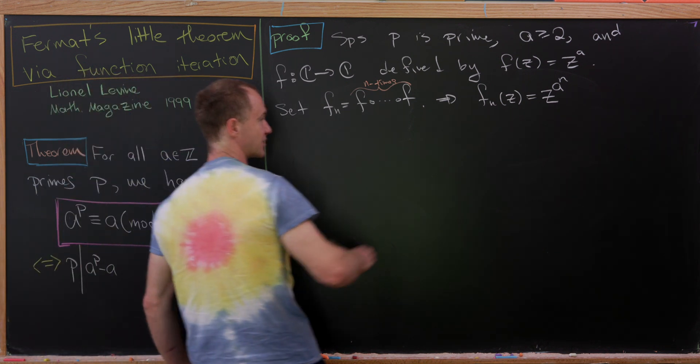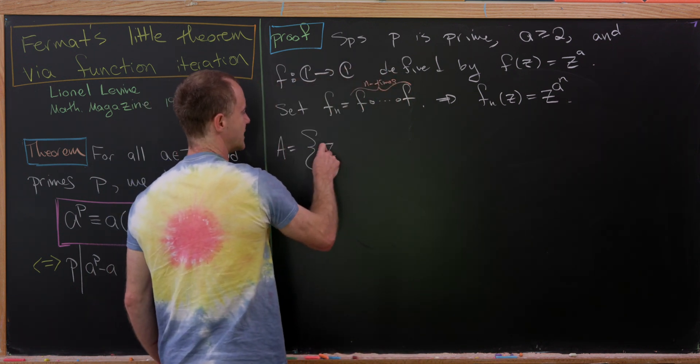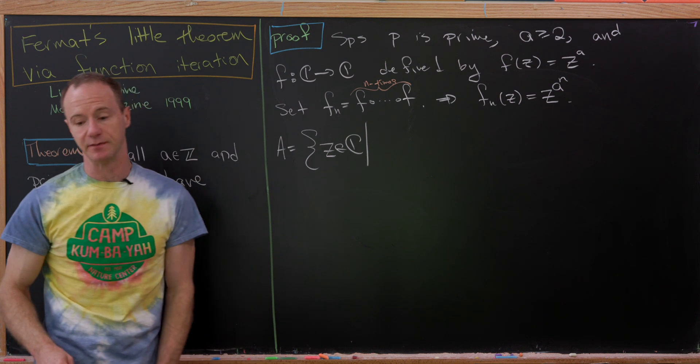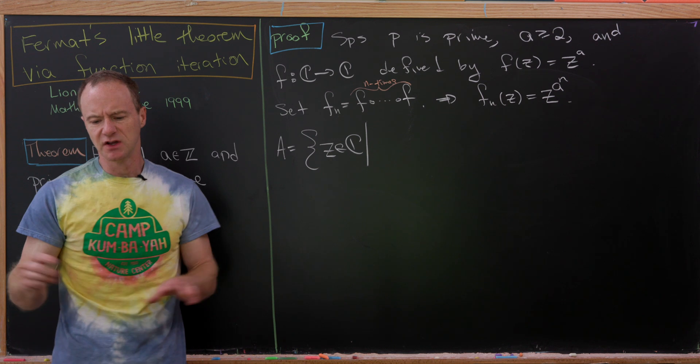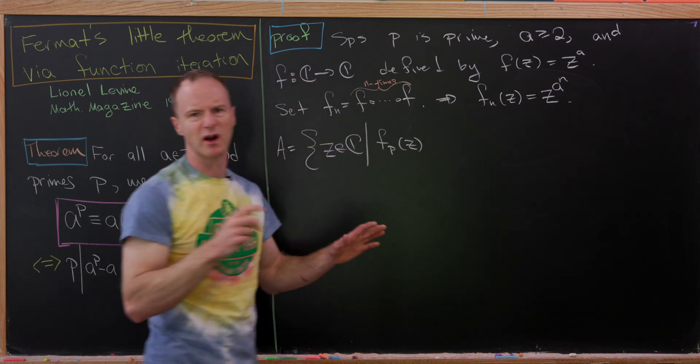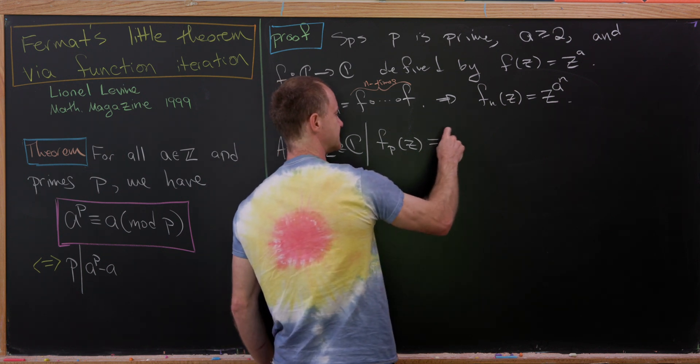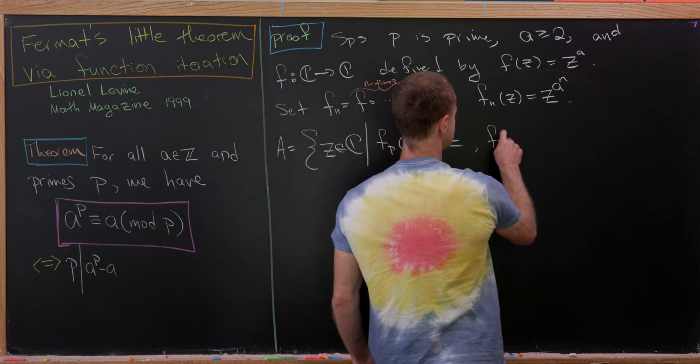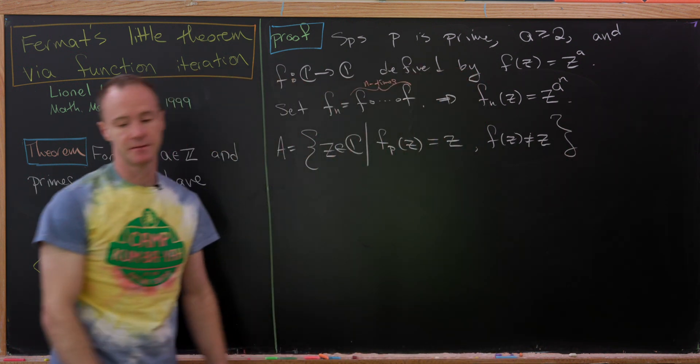And now we're going to consider a set. And what will that set be? Well, I'll define it to be A, and it'll be all complex numbers that are fixed points under the function F sub N, but not fixed points under our original function F. So let's write it like this. We have F sub P of Z, and I should have said F sub N where N is equal to P. We've got to get this prime in there somewhere. Okay, so we've got F sub P of Z equals Z. So Z is a fixed point, the P-fold composition of F, but it is not a fixed point of the original F.